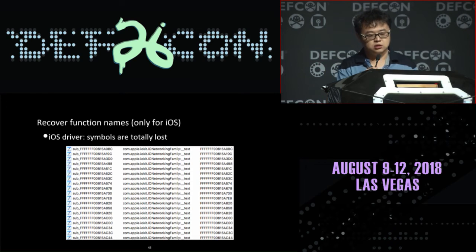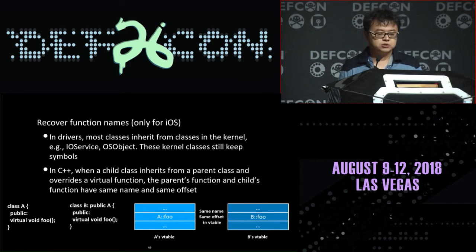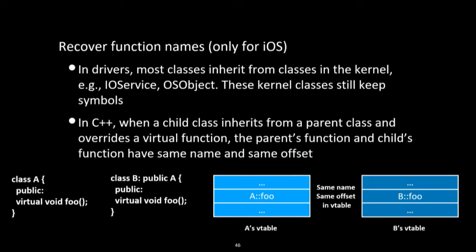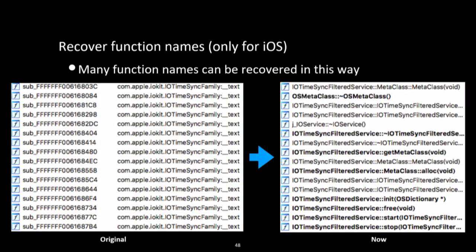The next feature of RilK is recovering function names. iOS driver functions do not have meaningful names at all — they are prefixed with meaningless identifiers. We recover function names by leveraging two facts: most driver classes inherit from kernel classes that have symbols, and in C++ when a child class overrides a parent's virtual function, they share the same name and vtable offset. So we can recover names of virtual functions that override kernel class functions. This is not a complete solution but covers plenty of critical functions.